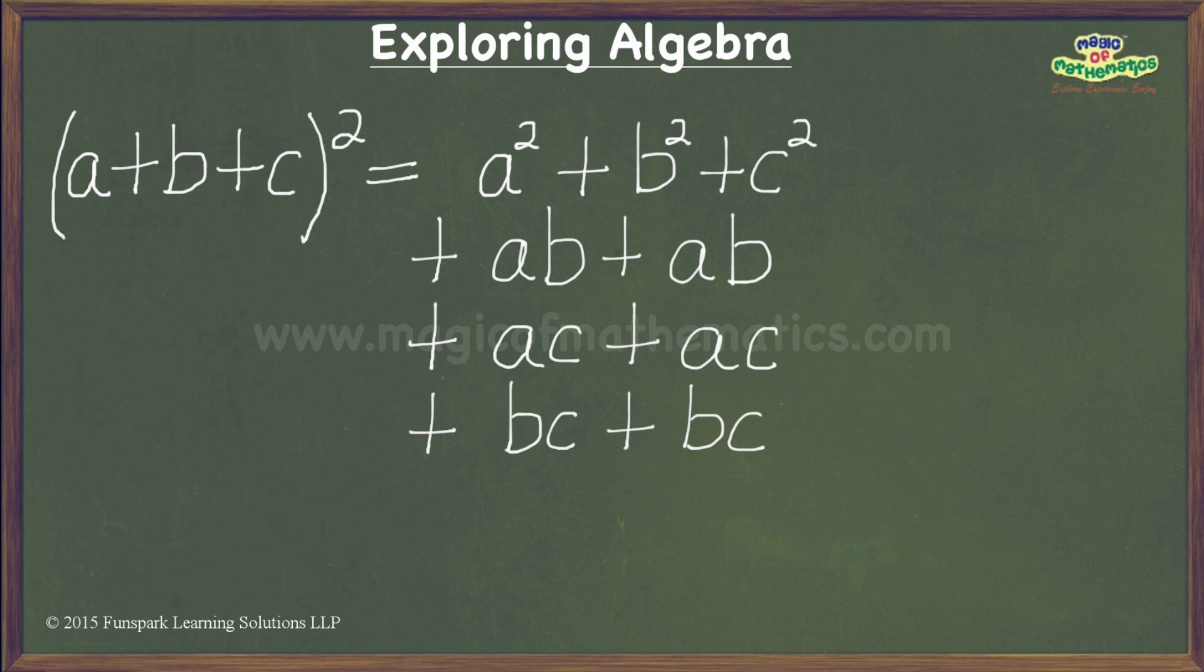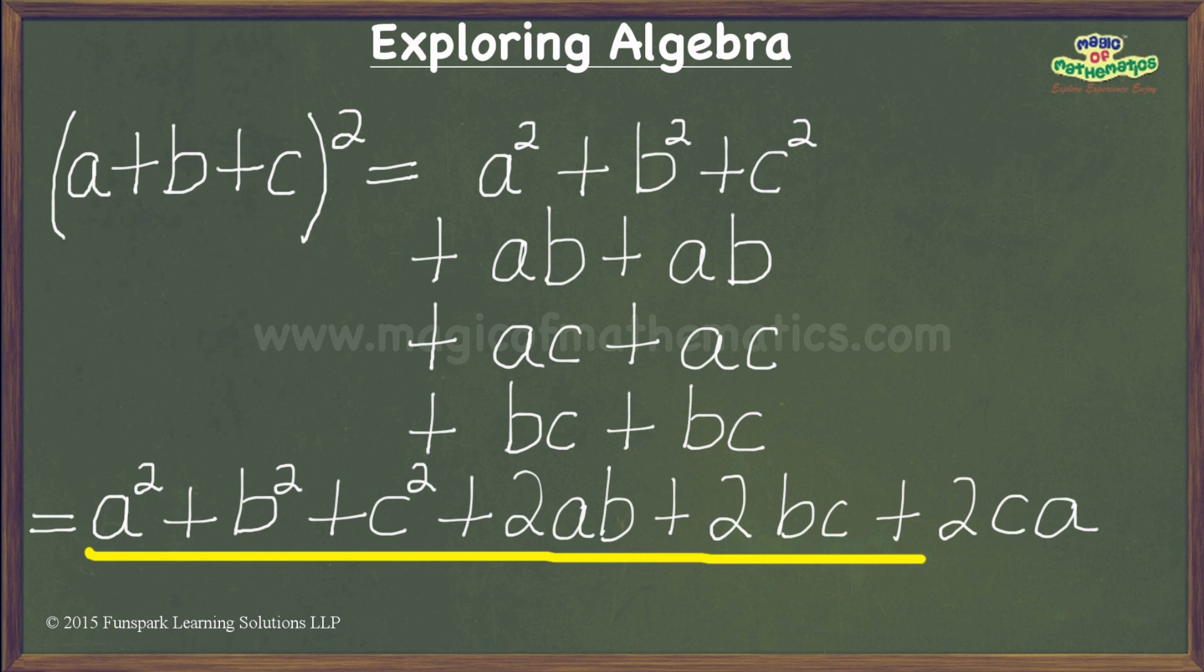Adding like terms, the right-hand side expression is equal to a² + b² + c² + 2ab + 2bc + 2ca, and this is what we wanted to prove.